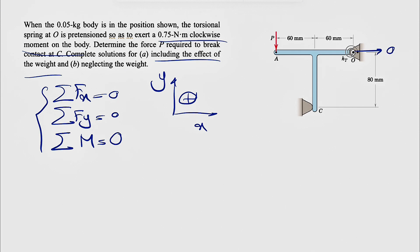So we have a pin at O, which means we have both X and Y components, Ox and Oy. Normally we're going to have a normal force at C, but since the question is asking us to find a force P in order to have that normal force at C equal to 0, so we won't consider any force in there.